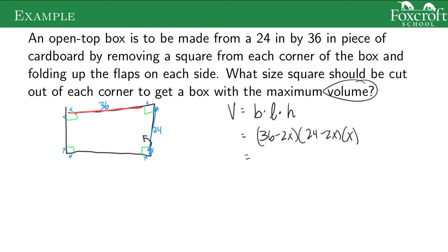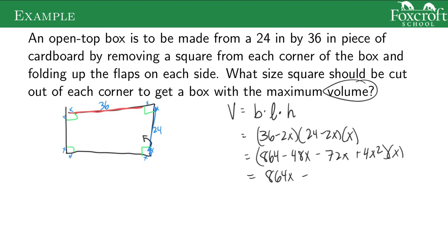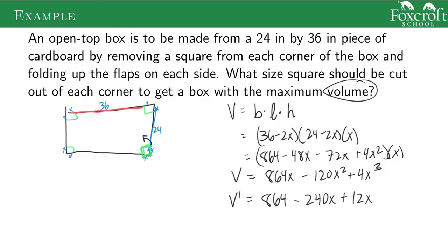Multiplying this all out: 36 times 24 is 864, minus 48x minus 72x plus 4x squared, all multiplied by x. Distributing x in: 864x minus 120x squared plus 4x cubed. This is my volume function depending on how big of an x square I cut out. Now I find the derivative: 864 minus 240x plus 12x squared.